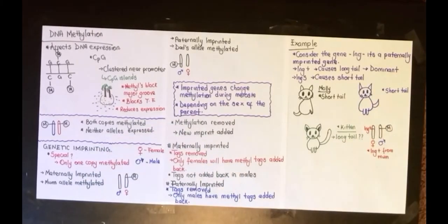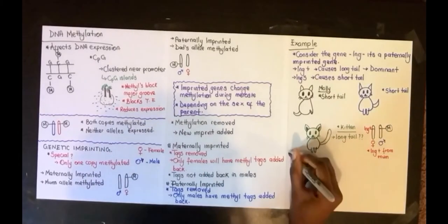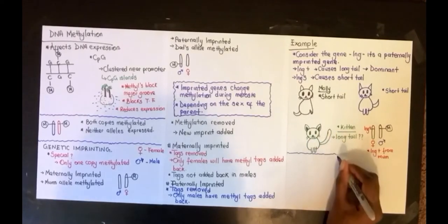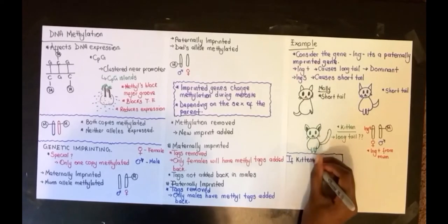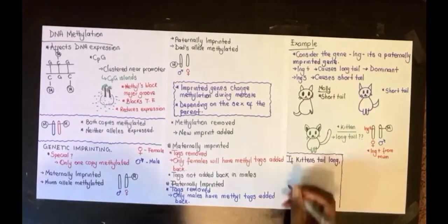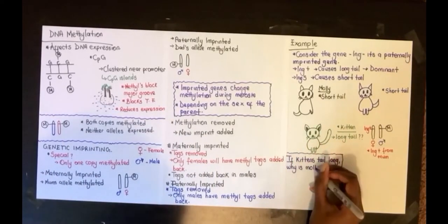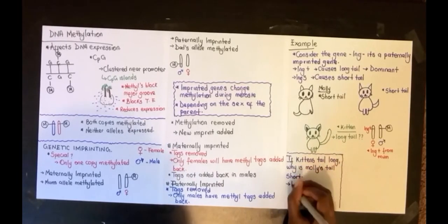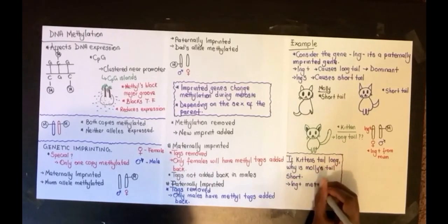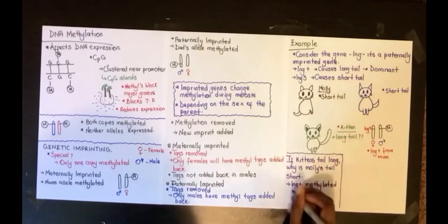But then you might ask, why is Molly's tail short? Remember, we know that she has the gene because she's able to pass it on to the kitten—it's obvious the kitten's tail is long. But it's not being expressed in Molly for some reason.